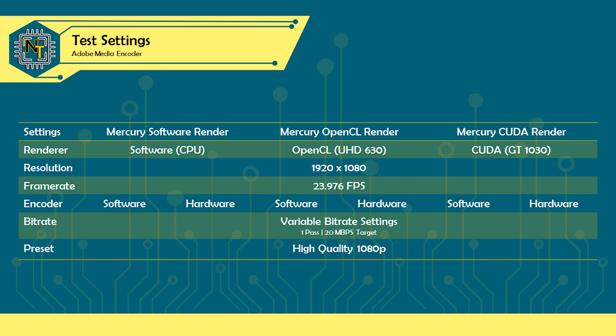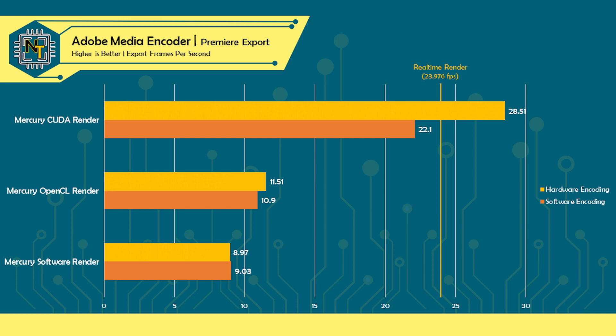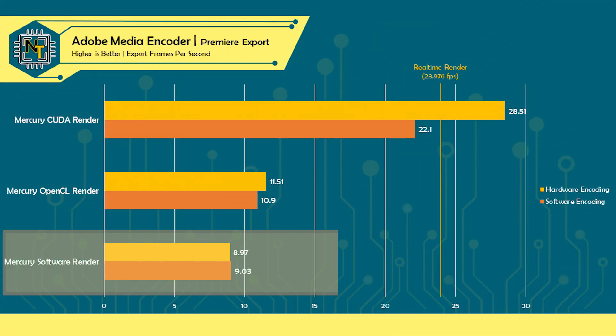After exporting a 2 minute and 32 second project with these settings, I calculated the exported frames per second each setting yields. Starting off with the slowest is, as expected, software rendering at roughly 8.97 FPS. This is when all the work was done entirely by the CPU alone. What's more interesting is that when we turn on hardware accelerated encoding, the exported frames per second remain within margin of error. What gives? It's supposed to be faster, right? Well, yes — but maybe not. We'll get back to that later.